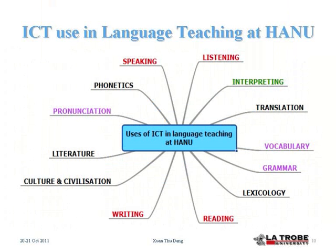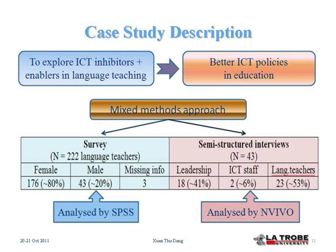At Hanoi University, ICT is used to teach different language skills and subjects. The main skills are listening, speaking, reading, writing, and interpreting and translation. The goal of the case study is to explore the factors which inhibit and enable ICT use in language teaching in Vietnam, taking the case of Hanoi University.